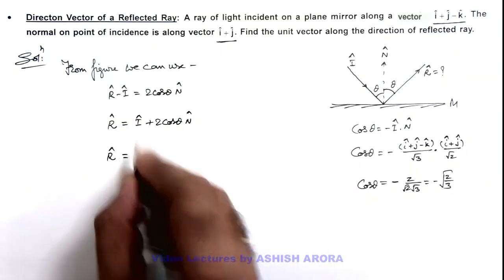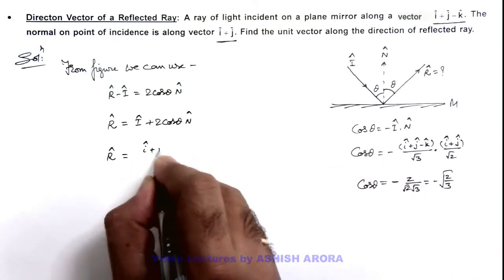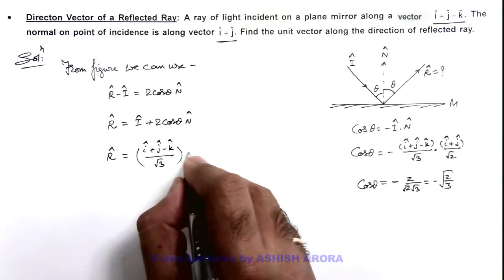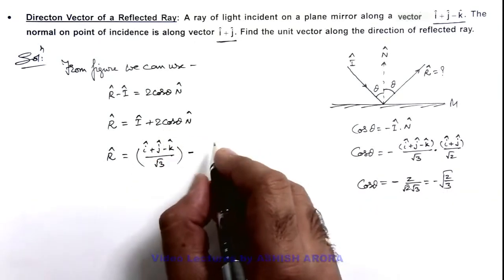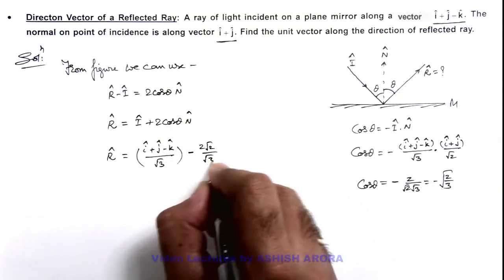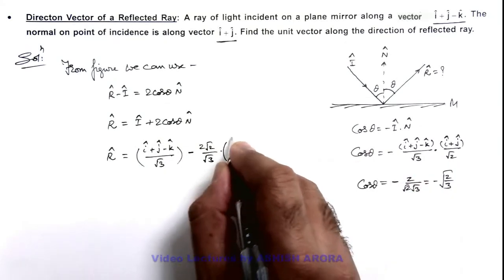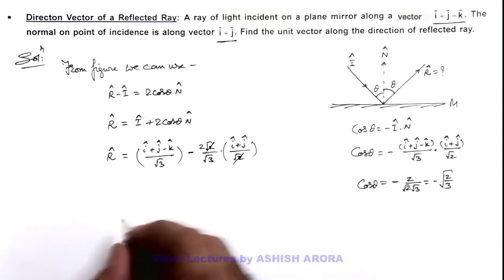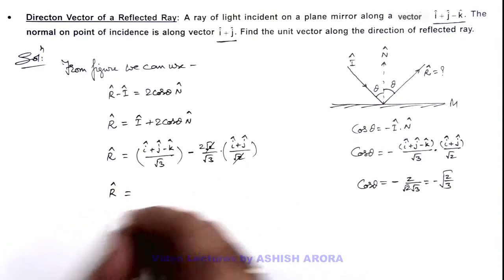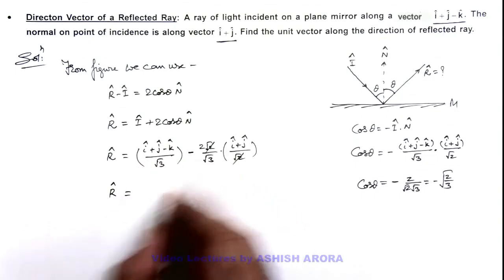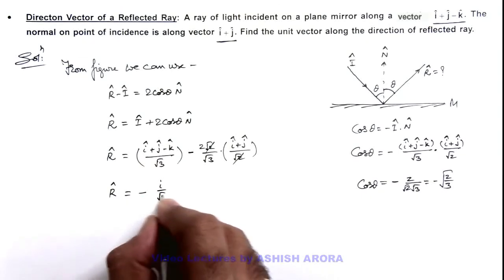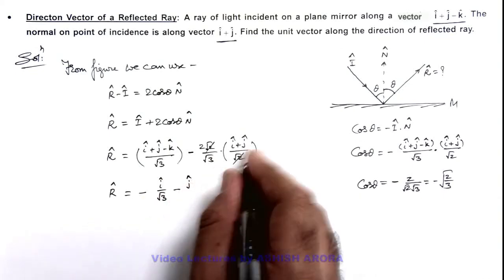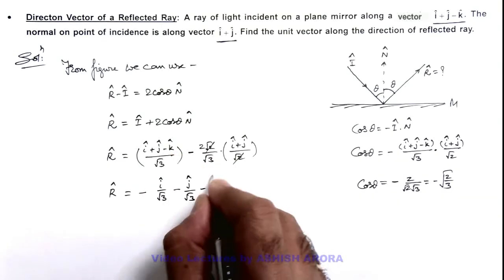The value of r̂ is: î = (î + ĵ − k̂) / √3, and since cos θ = −√(2/3), the term 2 cos θ becomes −2√2 / √3. Multiplying by n̂ = (î + ĵ) / √2, the √2 cancels, giving: r̂ = (î + ĵ − k̂)/√3 − (2/√3)(î + ĵ). Expanding: î/√3 − 2î/√3 = −î/√3, and ĵ/√3 − 2ĵ/√3 = −ĵ/√3, and the k̂ term gives −k̂/√3.